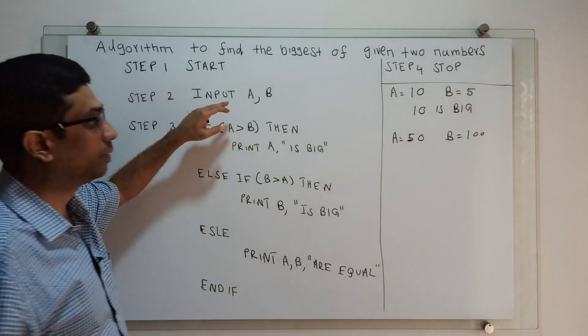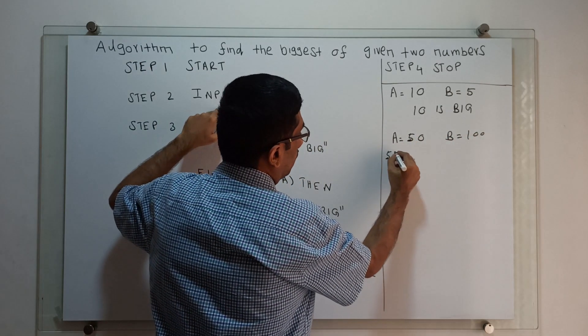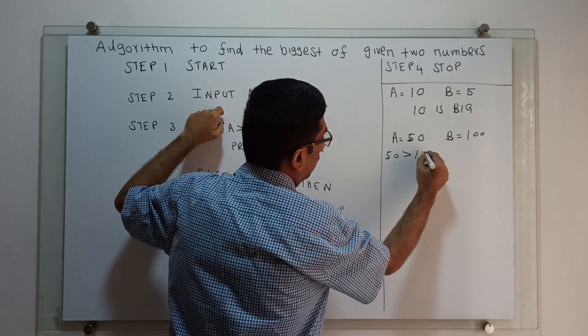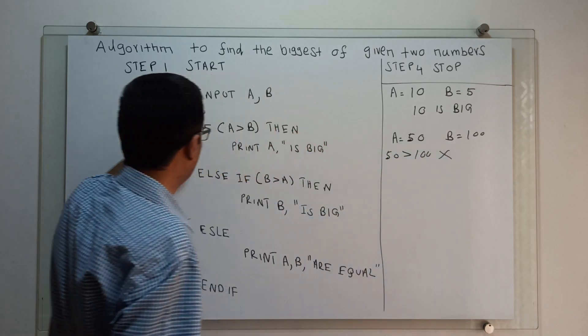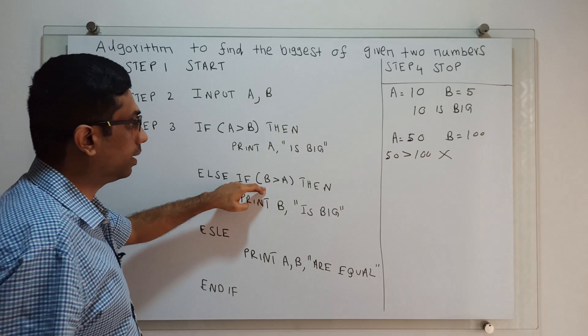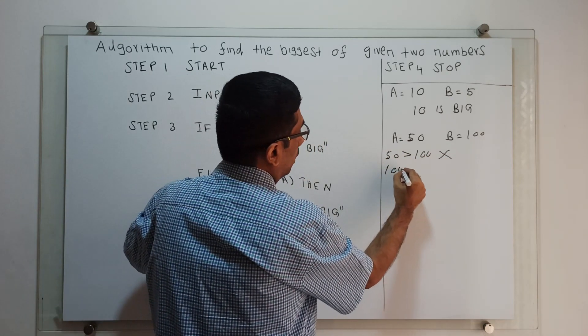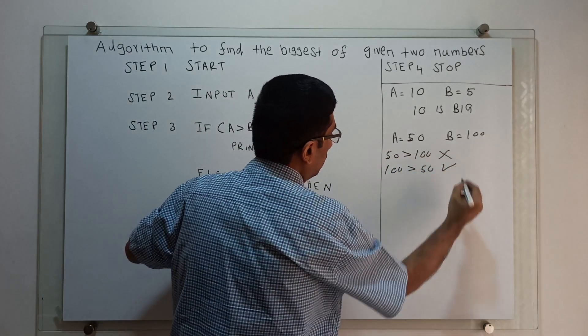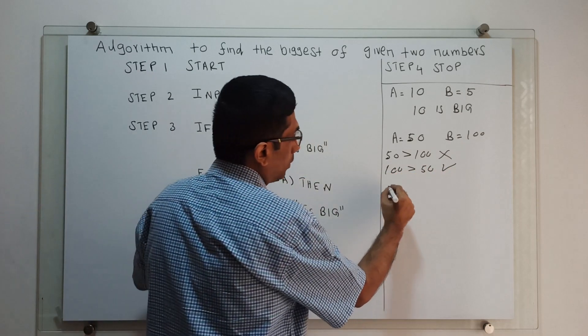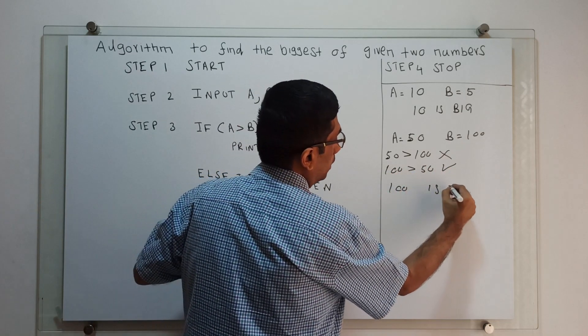We will check if A greater than B: 50 greater than 100. The condition is false. The control comes to the else-if statement: B greater than A. That means 100 greater than 50. The condition is true, then we print '100 is big'.